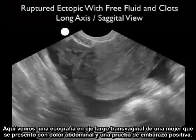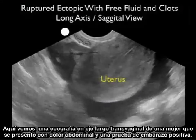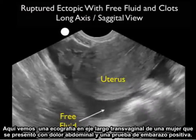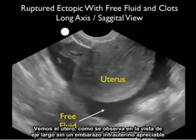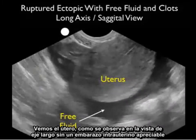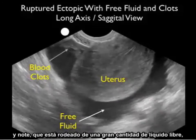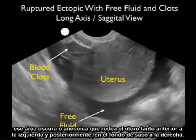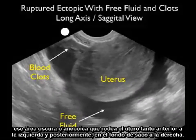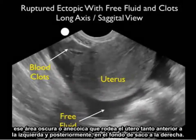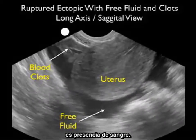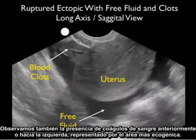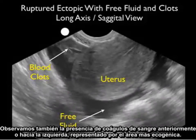Here's a transvaginal long axis ultrasound from a woman who presented with lower abdominal pain and a positive pregnancy test. Notice the uterus, as shown in the long axis view, without an appreciable intrauterine pregnancy. Notice that it's surrounded by a large amount of free fluid — that dark or anechoic area — surrounding the uterus both anteriorly to the left and posteriorly in the cul-de-sac to the right. That is the presence of fresh blood. Notice also the presence of blood clots anteriorly or to the left, that more echogenic area.